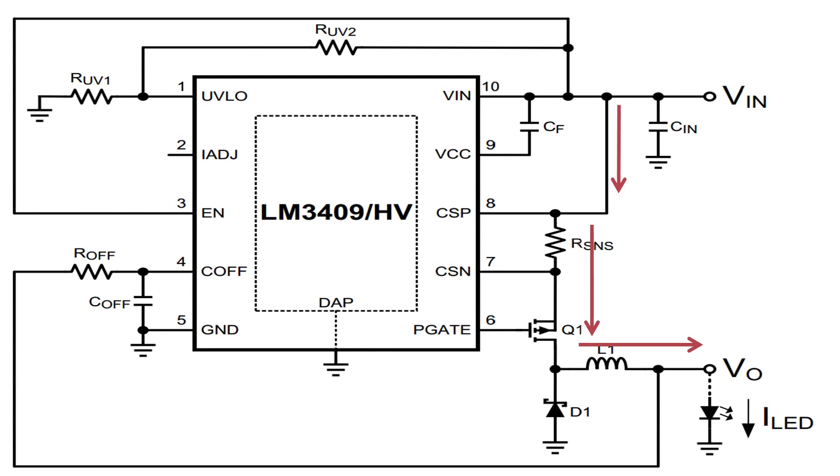Here we can see the main high current path going from the supply through the FETs and onto the LEDs. A point to note is the ground return which is not shown in the schematic but is also part of the high current path.